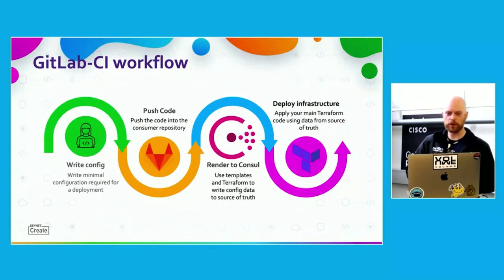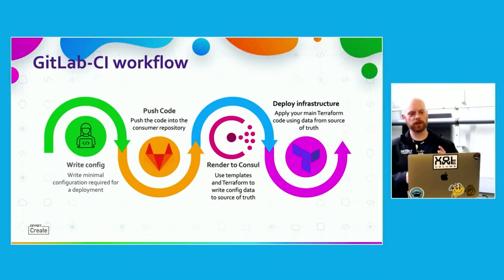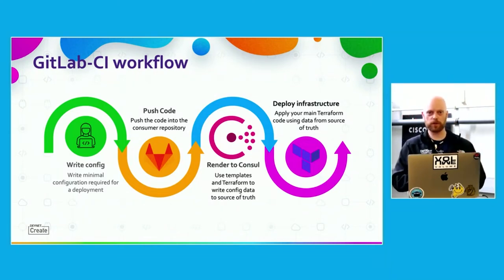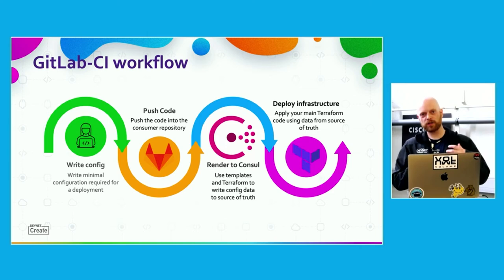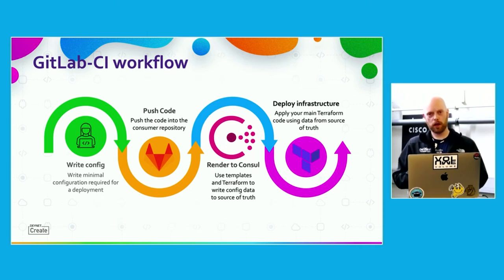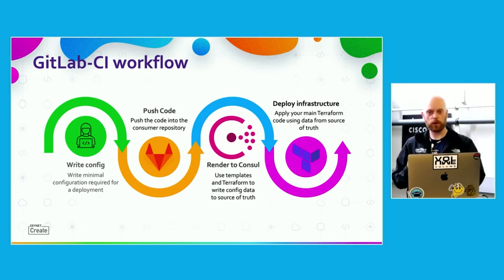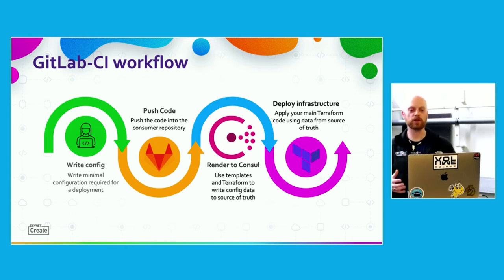This is our new workflow for deployments. You write the minimal configuration for your customer, push that code into GitLab, which kicks off a CI pipeline, grabs templates to render out that configuration into Consul. Once that's rendered out and put into Consul, another pipeline is kicked off on the monorepo, which deploys that infrastructure and realizes it on your ACI, FortiGate, and the rest of your environment.